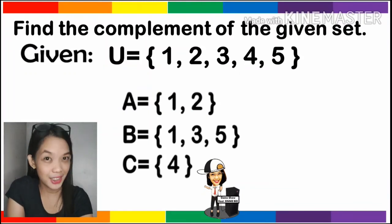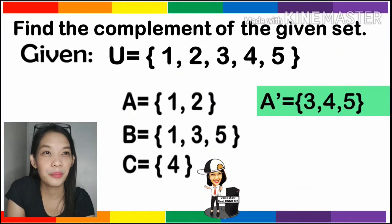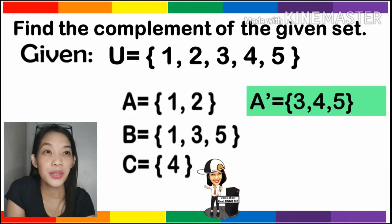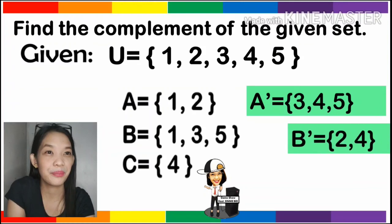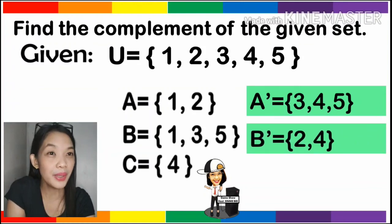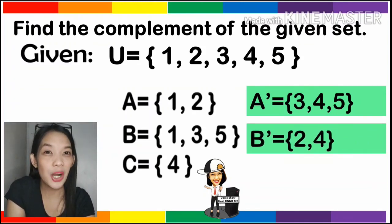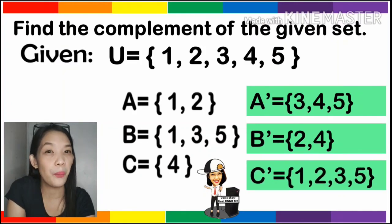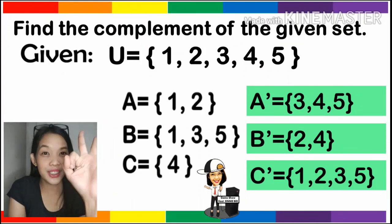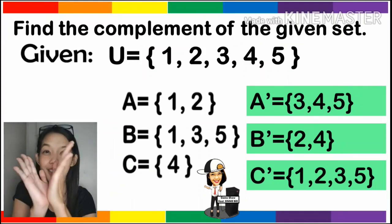Let's check your answers. The complement of A will be 3, 4, and 5. The complement of B will be 2 and 4. And the complement of C will be 1, 2, 3, and 5. So if you got all of them correct, then very good.